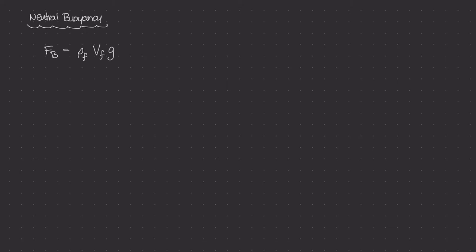So far we've been looking at very simple objects of uniform mass density, like a block of wood, a block of steel, or a block of ice. For most of those objects, the weight of that object — which I'll call f sub g — is equal to the mass density of that object times the volume of that object times the gravitational constant. If the object is fully submerged, the volume of the object equals the volume of the fluid displaced, so v naught equals v sub f.